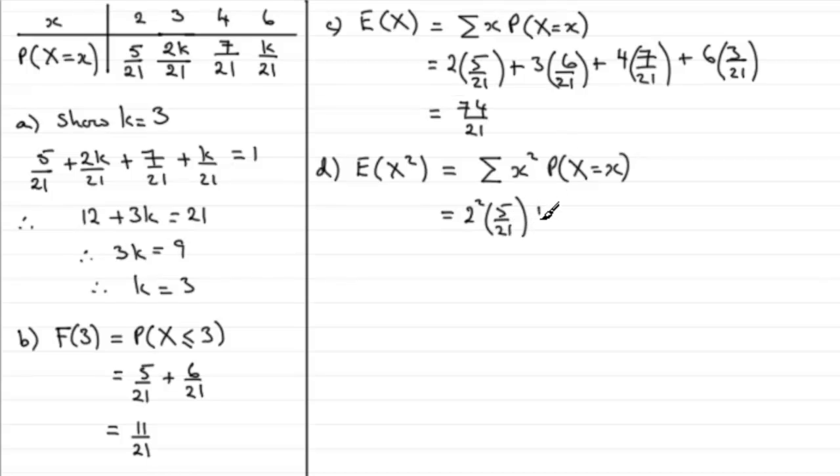plus 3 squared multiplied by its associated probability of 6 over 21, plus 4 squared times its probability, 7 over 21. And then finally plus 6 squared multiplied by 3 over 21. And if you work this one out, you end up with exactly 14.